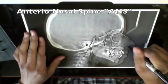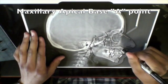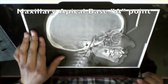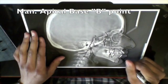Mark A point at the deepest point of the anterior curvature of the maxilla, and mark B point at the deepest point of the anterior curvature of the symphysis.